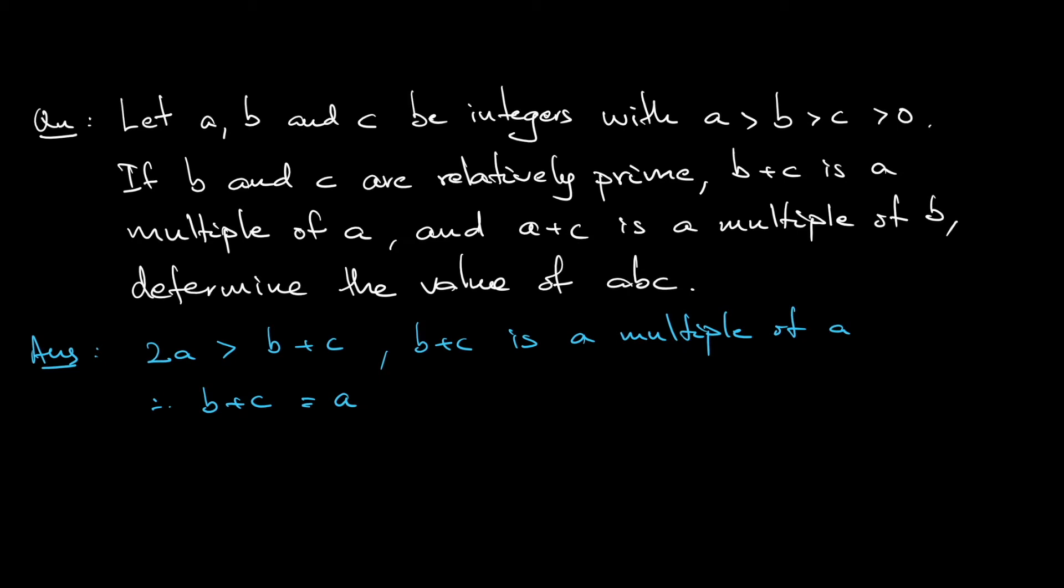Another thing is the third condition, a plus c is a multiple of b. So let it be kb or something, whereby k is an integer. So kb is a plus c, and if I substitute a with b plus c, I would have b plus c plus c.